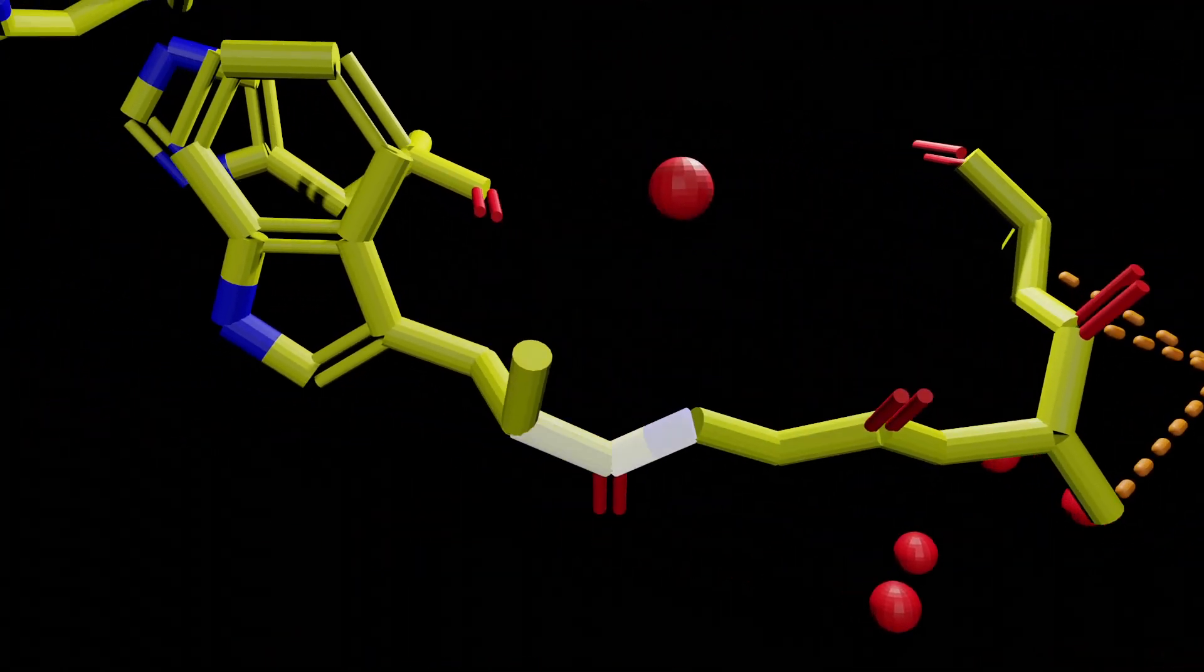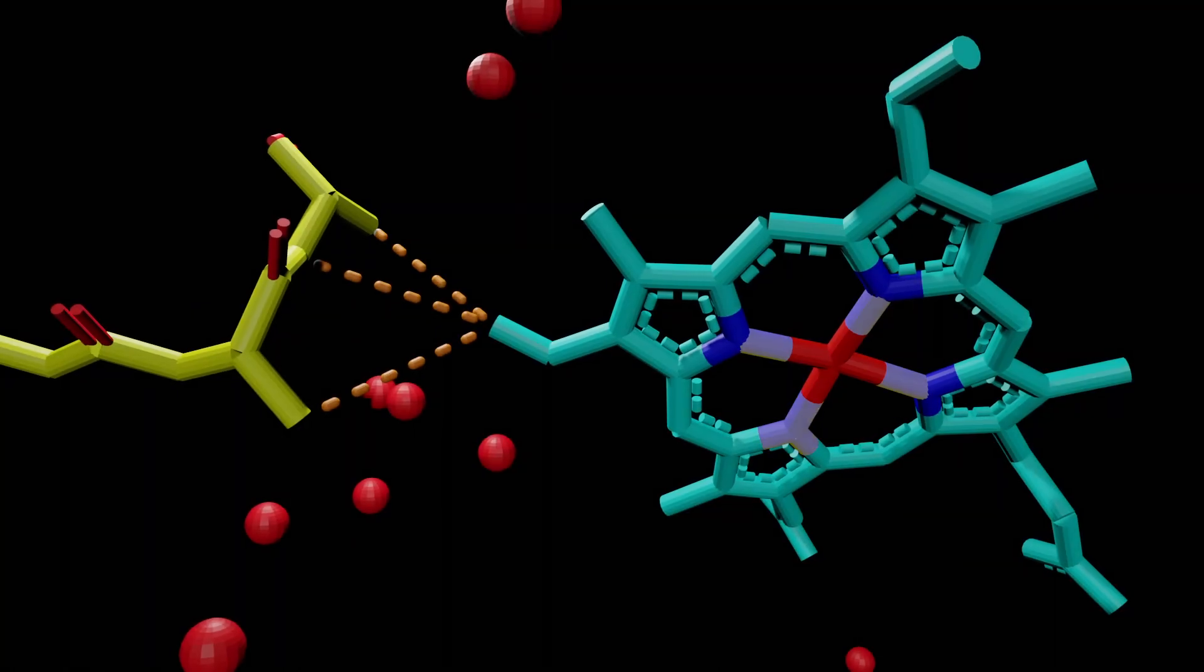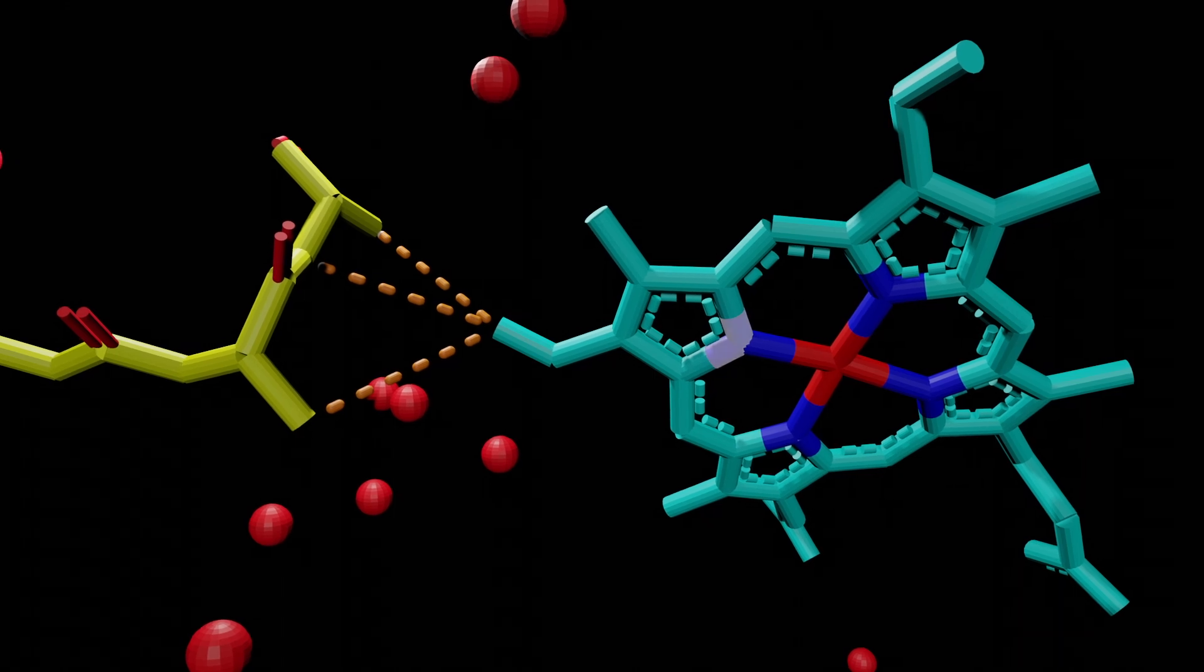Fe2+ in cytochrome c is oxidized to Fe3+. The porphyrin ring transfers this electron to asparagine 194 by virtue of its proximity.